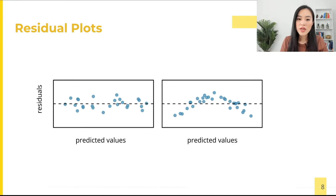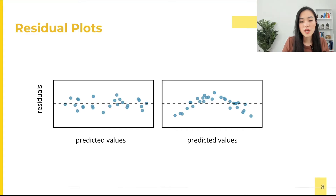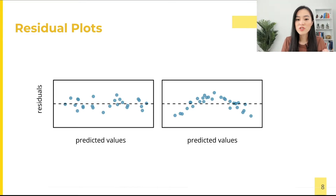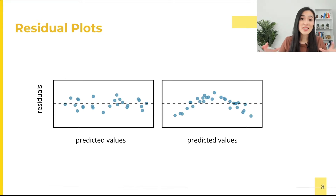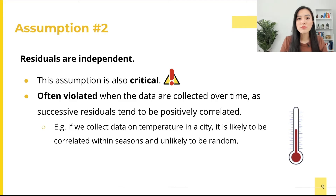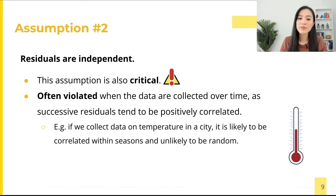The plot on the left does not show any obvious signs that the relationship between x and y is non-linear — the residuals appear randomly dispersed and the variance is the same all along the x-axis. But the plot on the right shows potential issues: there appears to be a curved trend in the residuals, suggesting the relationship between x and y is non-linear. We should not use a straight line to model this data; instead a more advanced technique should be used.